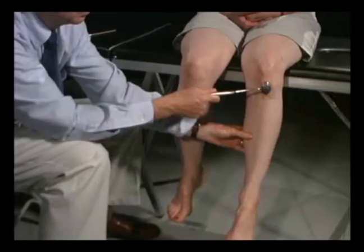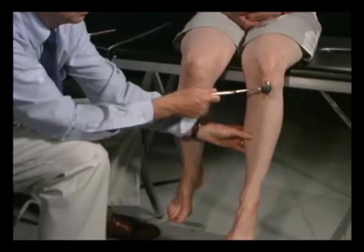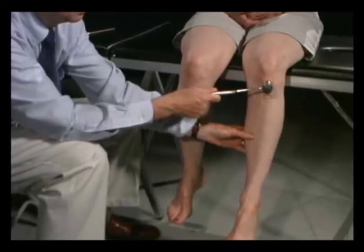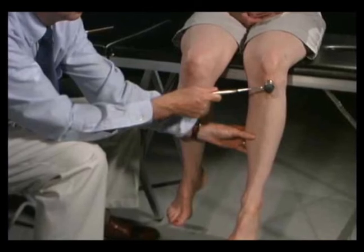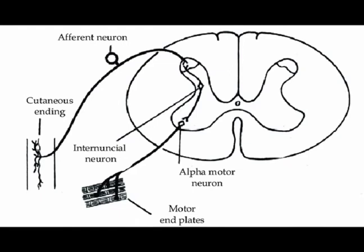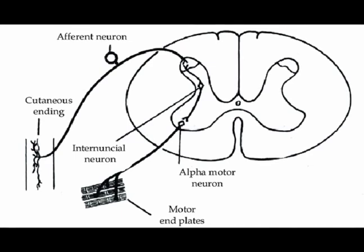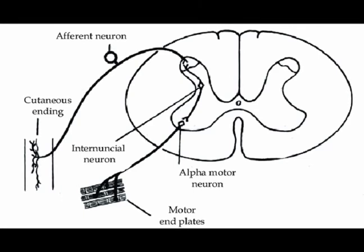When the clinician taps the muscle's tendon, the stretch receptors in the muscle spindle are activated. An afferent impulse is conducted via the group 1a afferent neurons to the spinal cord, where they directly synapse on an alpha motor neuron.